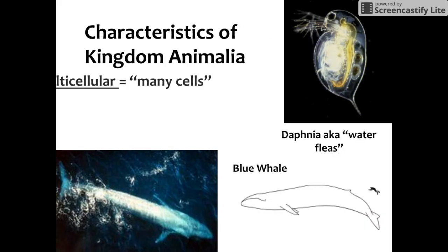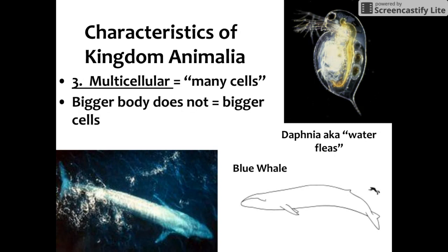The third characteristic is that all animals are multicellular. The bigger the animal, the more cells it actually has. The largest animal is the blue whale, and the smallest is the daphnia.